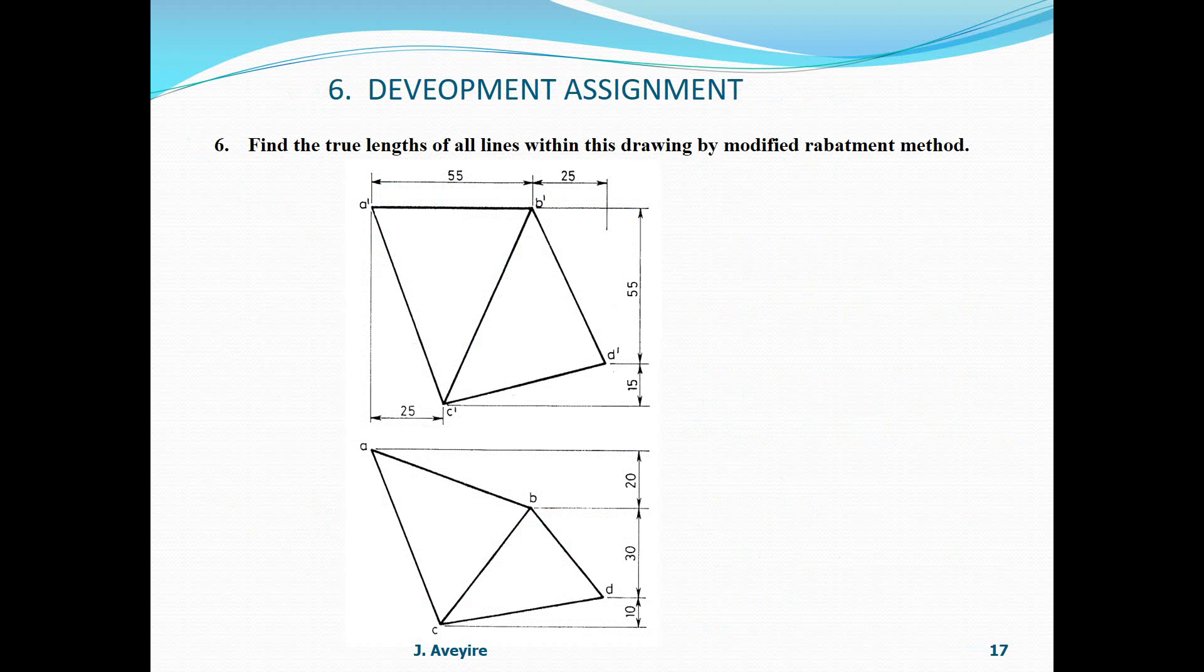Now, assignment six: find the true length of all lines within this drawing by the modified rabatment method. Please, neat, well-labeled dimensions, not accepted is required. And please, your photo must not be blurred. Please note when to use your flashlight.